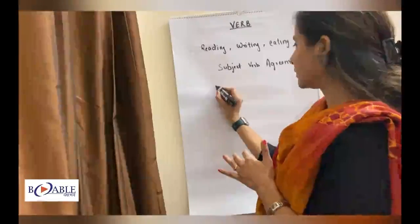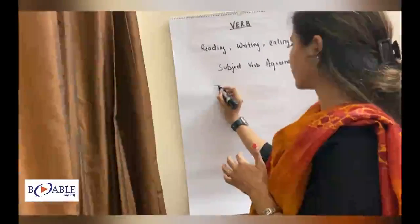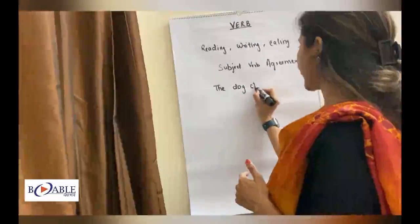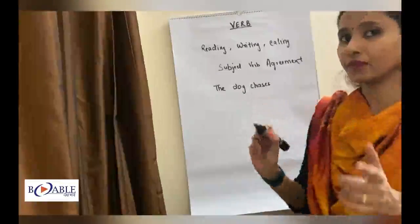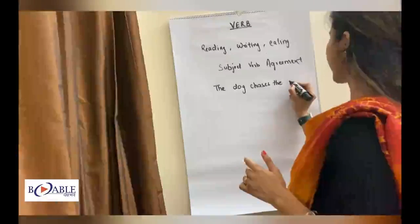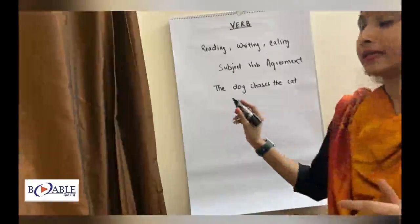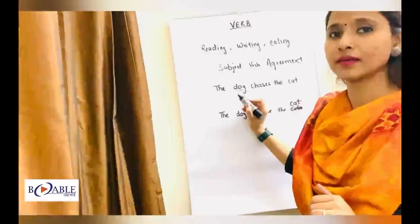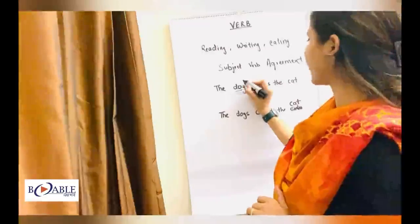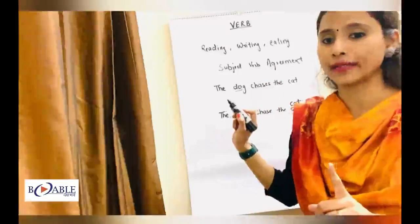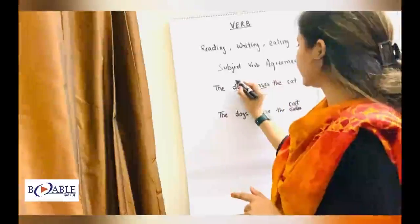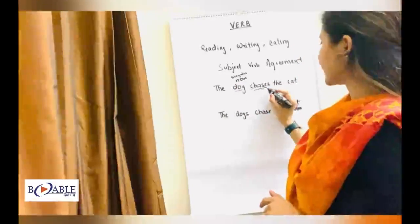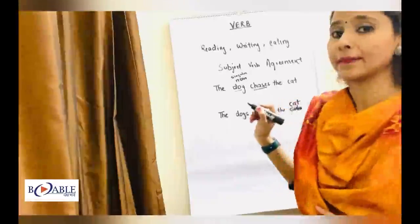For example: 'The dog chases the cat.' I will write two sentences. The dog chases the cat — this is in your workbook, you will understand very well. This is your singular, because dog is one. Your dog is a noun and it's a singular noun. Chases is your verb, this is your Kriya.